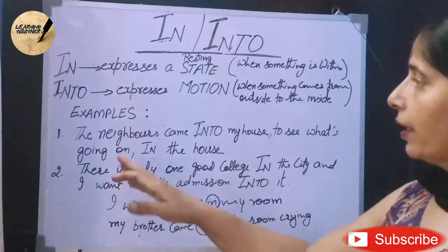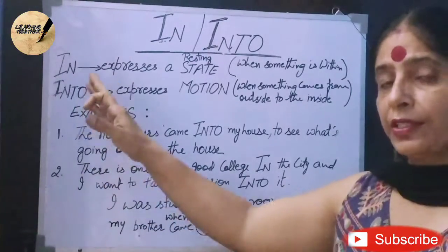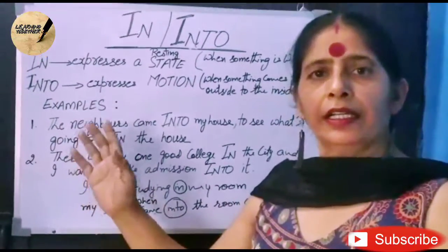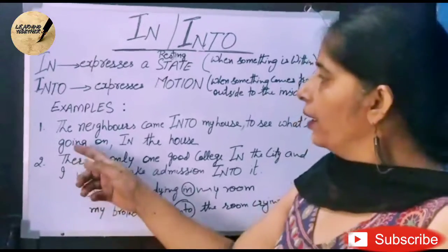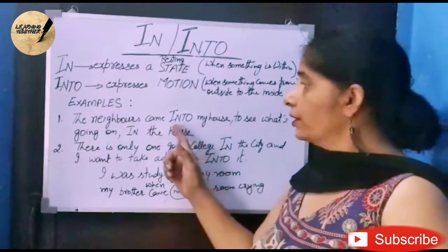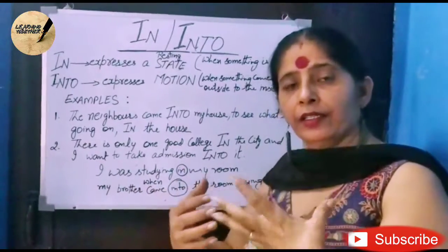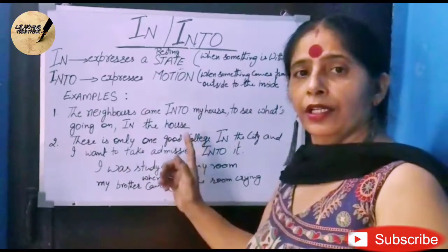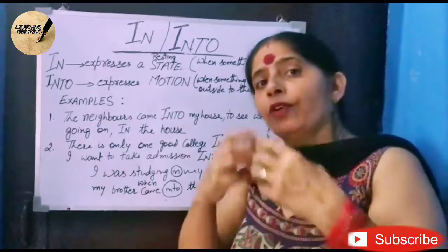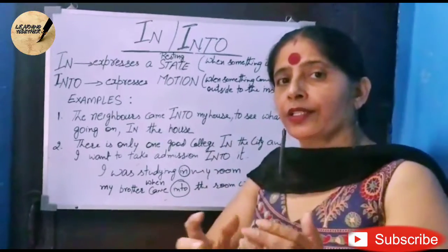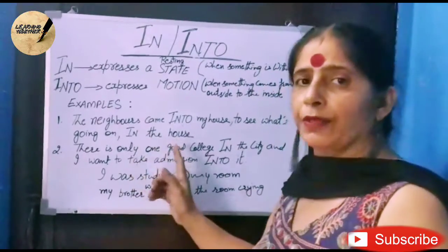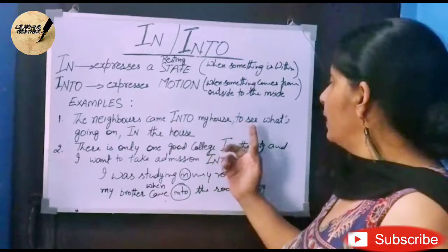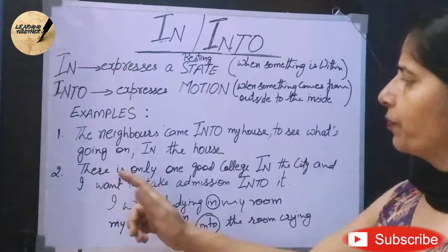Now with examples, I'll use these two words in a single sentence so the difference is clear. The first example: 'The neighbors came into my house' — 'into' means walking, it means motion. 'To see what's going on in the house' — whatever is going on is already happening inside, so it's not showing motion. That's why we use 'in the house'.